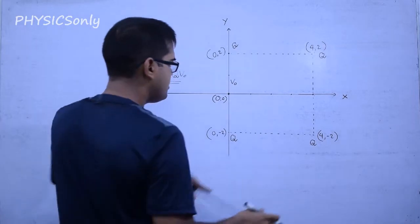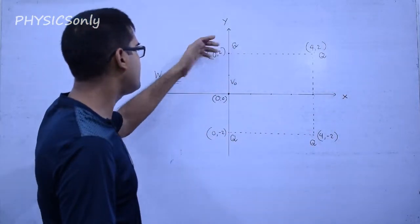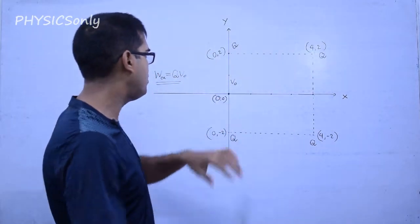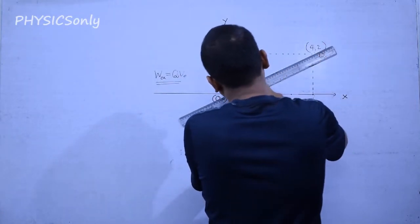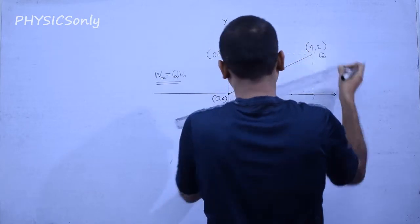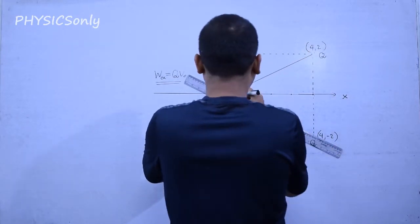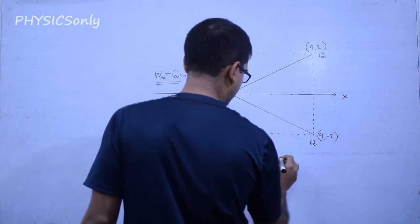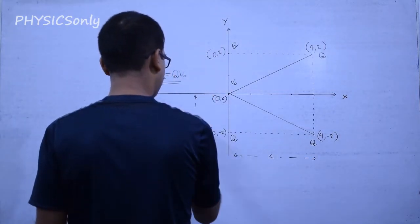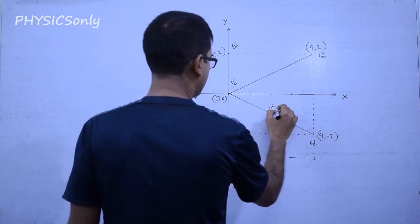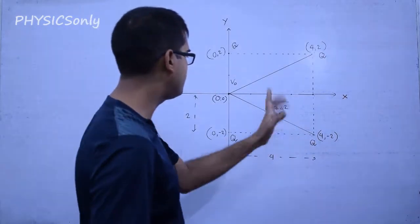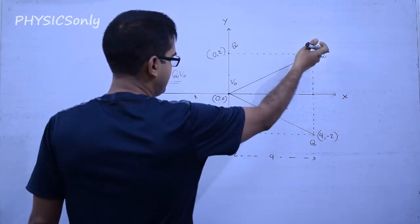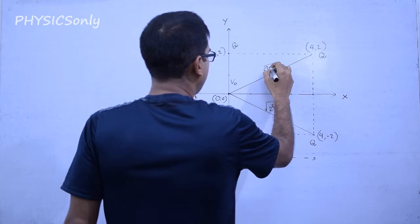To calculate V₀ at the origin, we need to find the distances from each charge to the origin. For the charges at (0,2) and (0,-2), the distance is simply 2. For the charges at (4,2) and (4,-2), we draw the hypotenuse: this distance is √(4² + 2²) = √(16 + 4) = √20. So those two corner charges are at distance √20 from the origin.